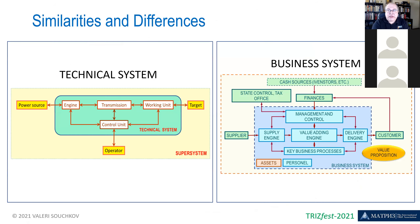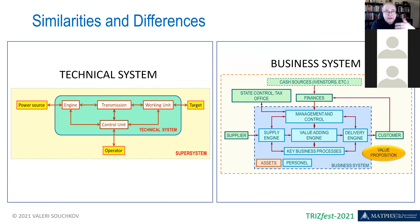The basis of TRIZ is the technical system. TRIZ has been different from many other areas of technology and engineering in that the borders of technical or engineering systems were not clearly established. One of the biggest advantages of TRIZ is that it's based on understanding the technical system and how technical systems evolve — we can clearly define certain borders. When we move to business, we deal with business systems.